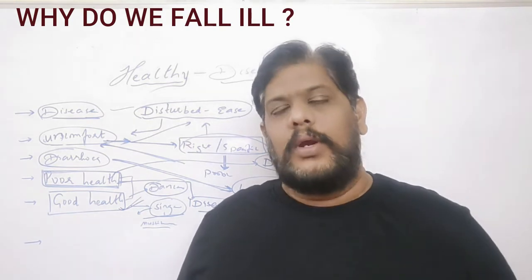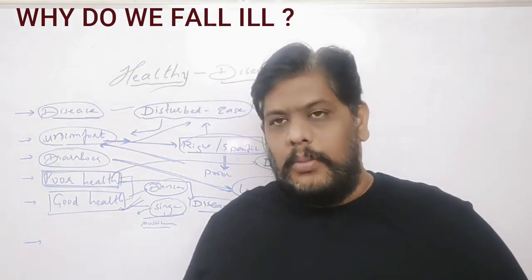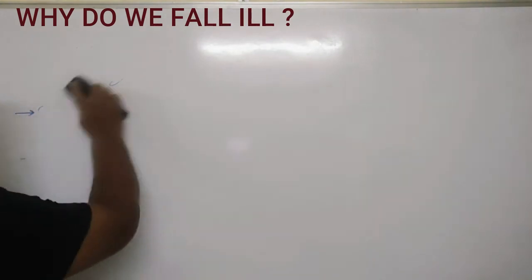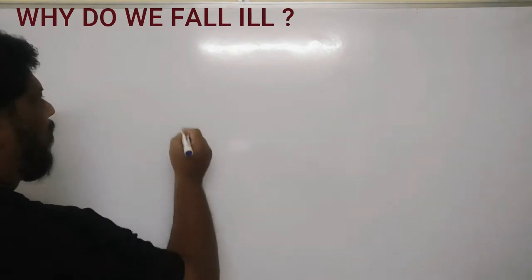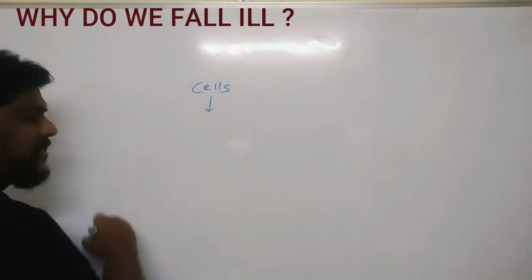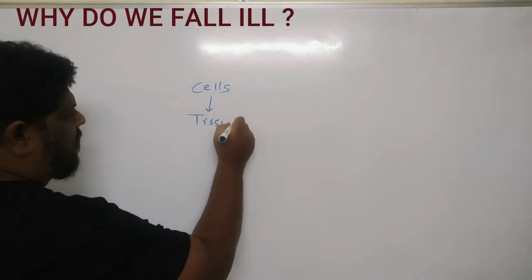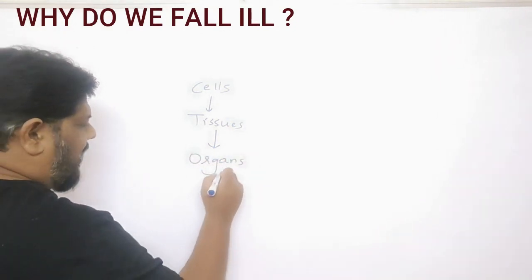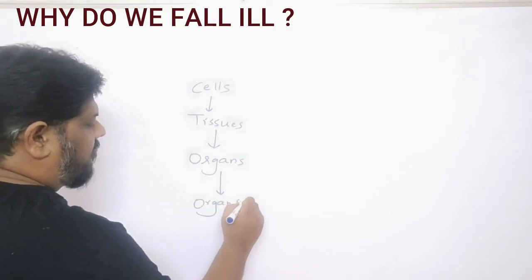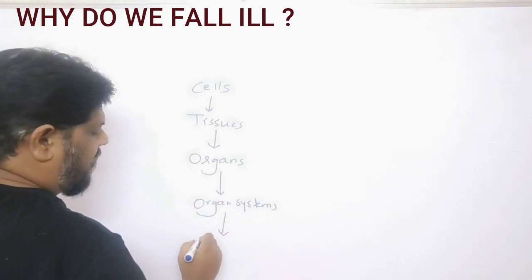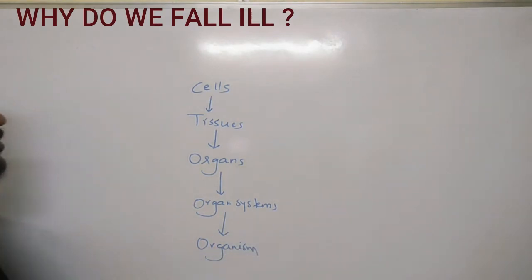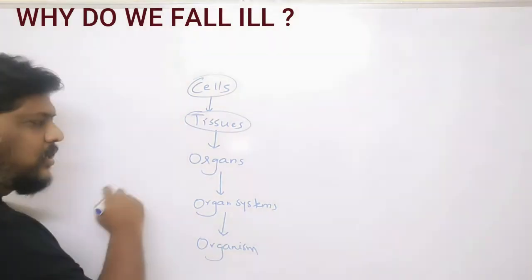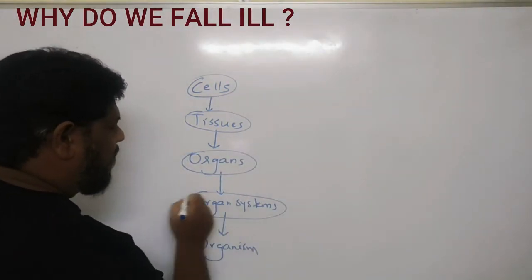The next question is: how do you know that you are sick? How do you know there is a problem in your body? Our body is made up of cells. Some cells combine to form tissues, tissues combine to form organs, organs combine to form organ systems, and organ systems combine to form an organism.